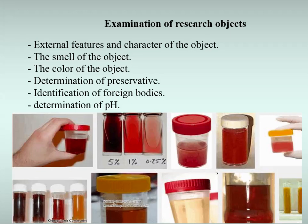Formalin also causes breakdown of a number of other toxins, for example ammonia and hydrogen cyanide, making it impossible to find and prove them. Therefore, before starting chemical toxicological analyses, it is necessary to know whether the research object contains preservatives and, if so, which one. If the forensic chemical laboratory receives biological material preserved with formalin, phenol, or other substances, the chemist-expert must draw up an act on violation of the rules of sending objects for chemical toxicological analyses and send it to the forensic investigation department.